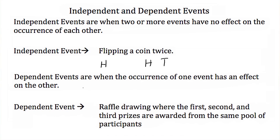Dependent events are just the opposite of independent events. Dependent events are when the occurrence of one event has an effect on the other. An example of this is a raffle drawing where the first, second, and third prizes are awarded from the same pool of participants.